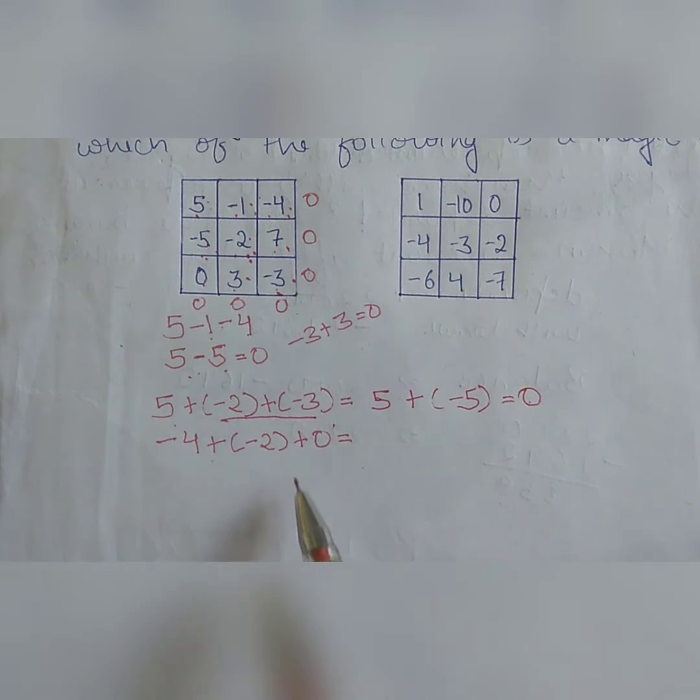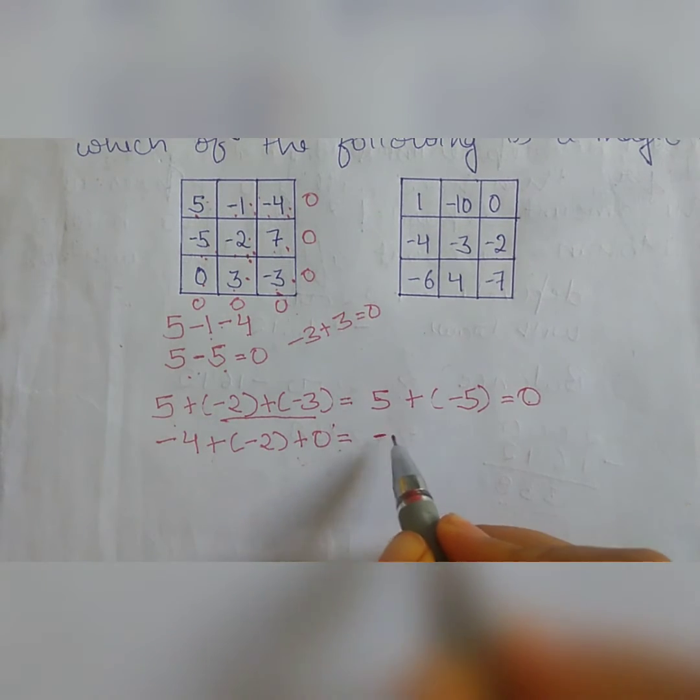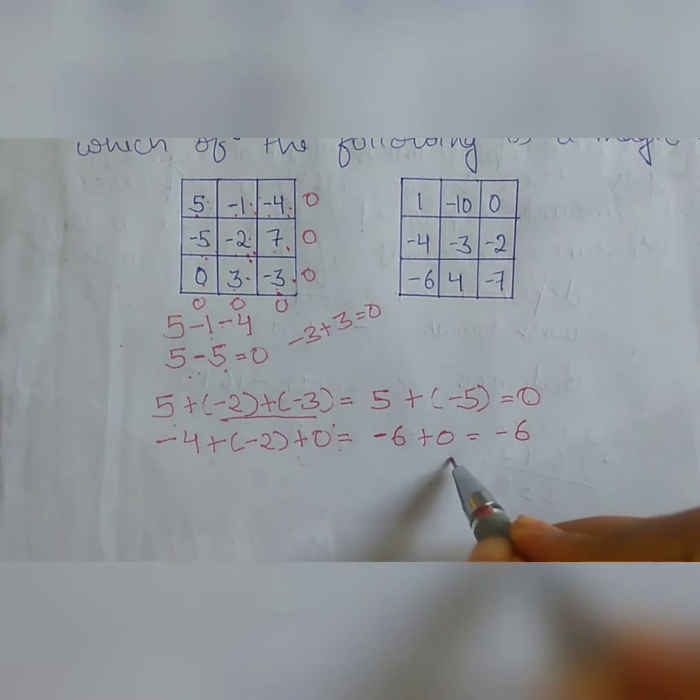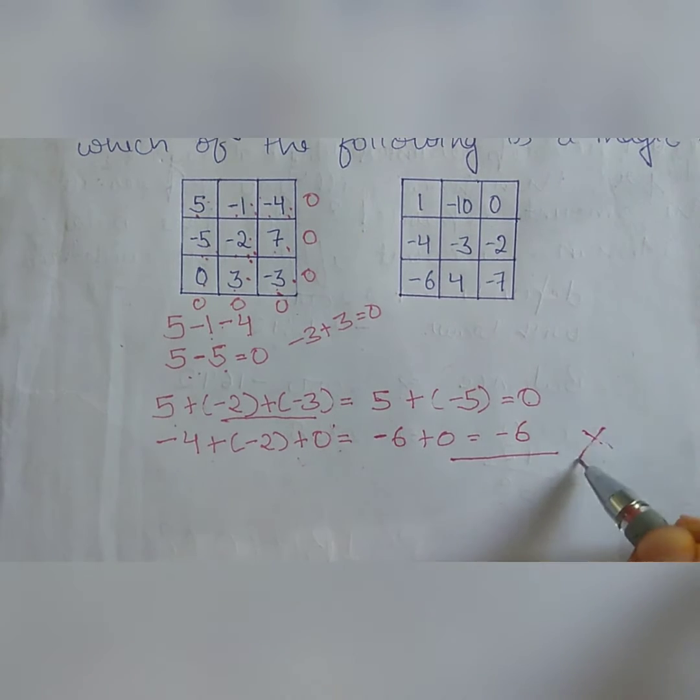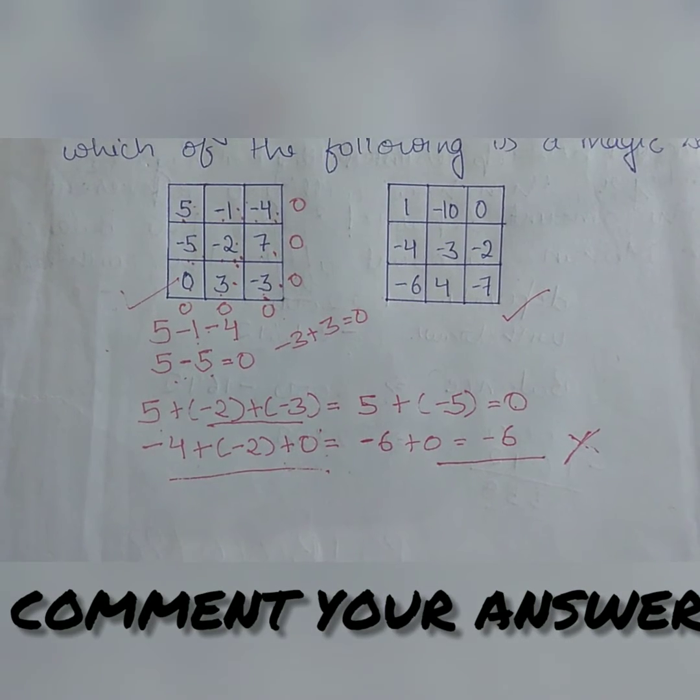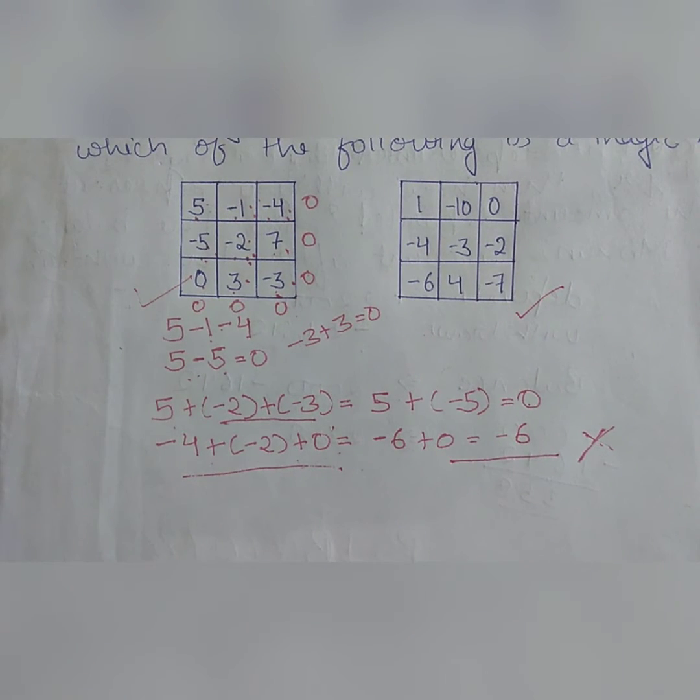Now we have to check this diagonal whether the sum of this will be 0 or not. This will decide whether this square is a magic square or not. So minus 4 plus minus 2 is minus 6 plus 0 equals minus 6. So here this is not a magic square, as this diagonal sum is not equal to 0. So this is how you check whether the square is a magic square or not. I have checked first square for you. Second, you will do it yourself and then tell me in comment section whether it is a magic square or not.